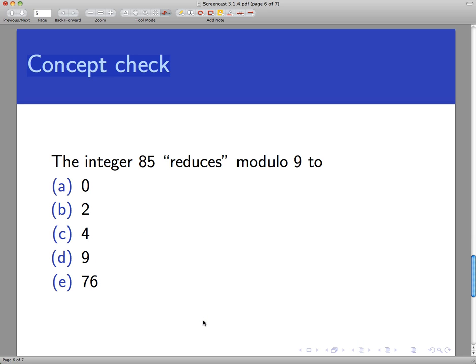Since this is kind of independent of the textbook, let's do two concept checks to make sure we understand what we're doing here. So what does the number 85 reduce to mod 9? Look at your options and come back in a moment with your answer.